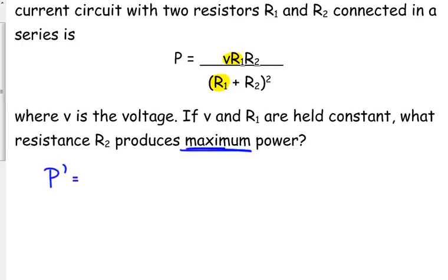So P prime, this is a quotient rule, but it's really not that bad. Okay, so low D high. On the top, R2 is the only variable. So the derivative of R2 is just the constant in front of it, V times R sub 1, minus high times the derivative of the bottom.